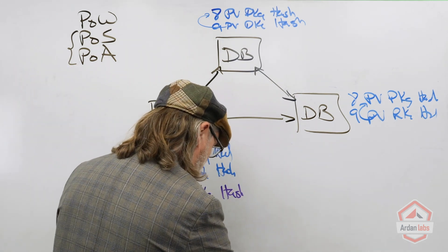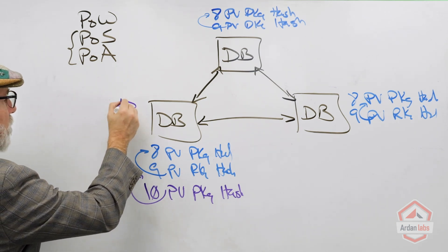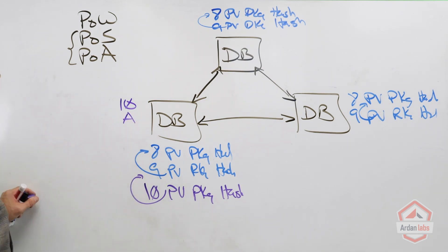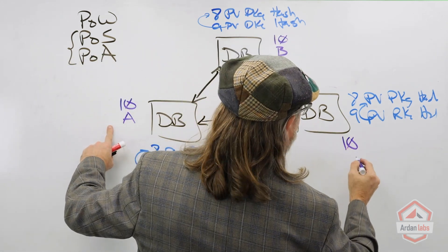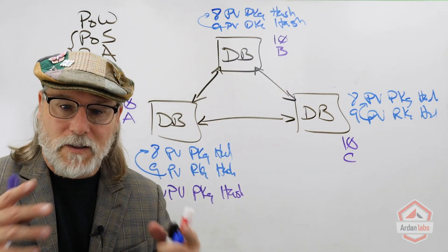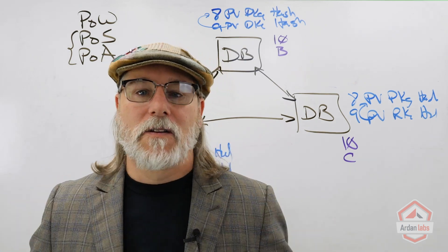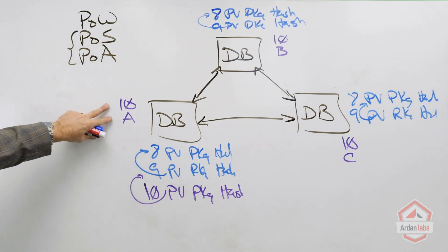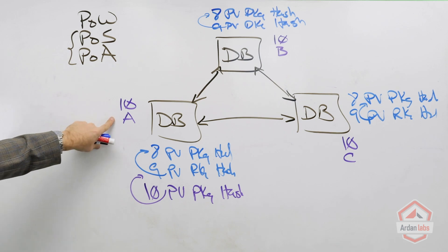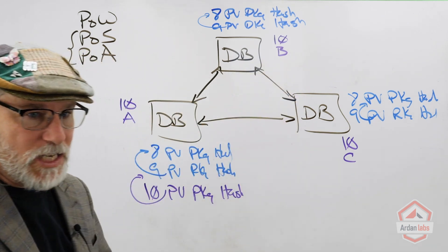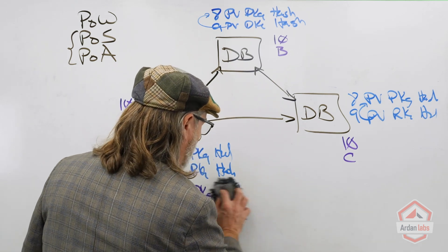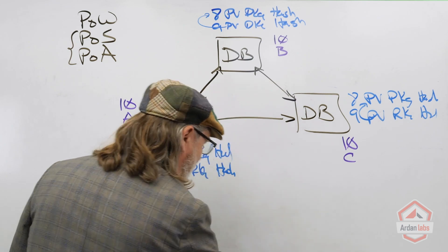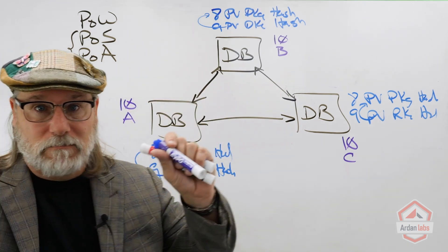Here's where it gets interesting: let's say we're looking to write record ten for package A, but at the same time somebody here wants to write record ten for package B, and somebody here wants to write record ten for package C. Each database has a client asking to write the next record ten, but with different data. Only one of these — A, B, or C — can be the next record. So how are we going to do this?